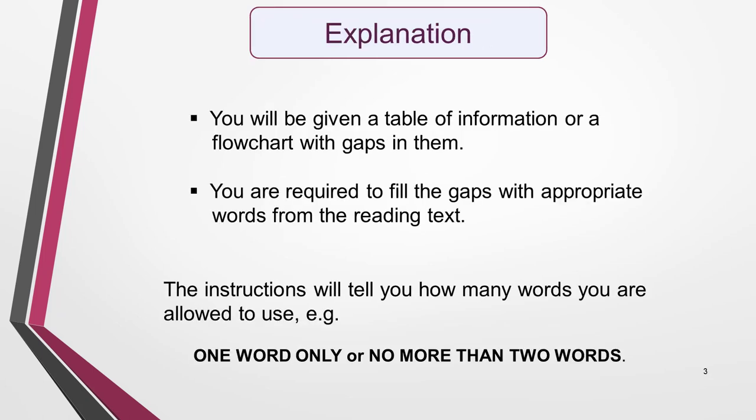For this type of question, you'll be given a table of information with gaps in it. You are required to fill the gaps with appropriate words from the reading text. You could also be given a flowchart. The main difference between the two is in the way the information is laid out. The process for completing flowcharts is exactly the same as with a table. The instructions will tell you how many words you are allowed to use to fill each gap. Read them carefully — they'll most likely tell you to use one word only or no more than two words. If you use the wrong number of words, your answer will be marked incorrect, even if the information you give is correct.